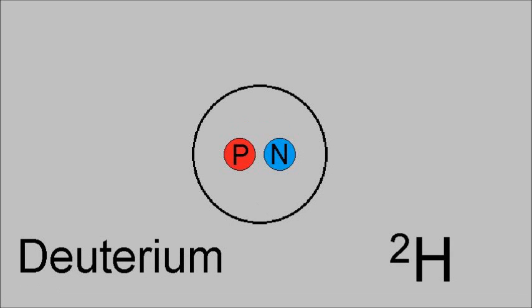Deuterium is the second most common form of hydrogen, making up about 0.0156% of all hydrogen atoms in the universe. It has an atomic number of 1 and a particle number of 1, having 1 proton and 1 neutron, and an atomic weight of 2.01410178.